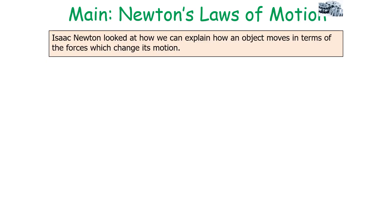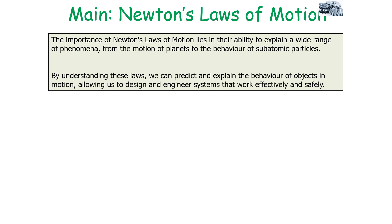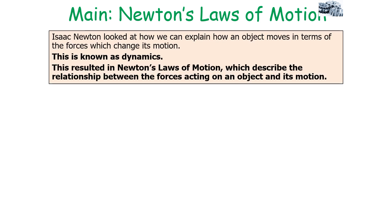Isaac Newton looked at how he could explain how an object moves in terms of the forces which change motion, which is known quite commonly as dynamics. This resulted in Newton's Laws of Motion, which described the relationship between the forces acting on an object and its motion.